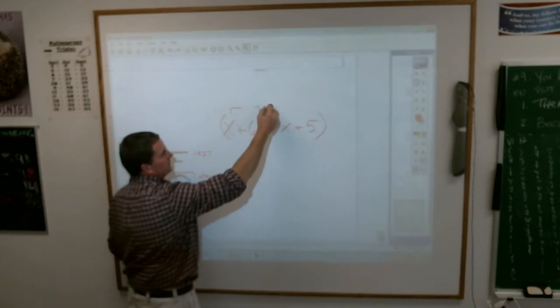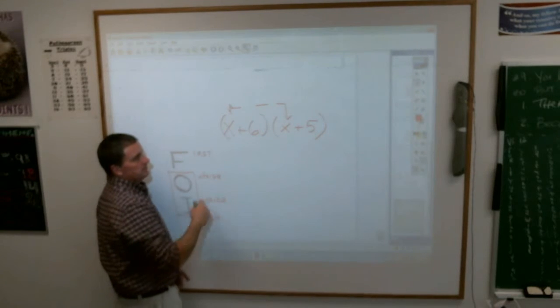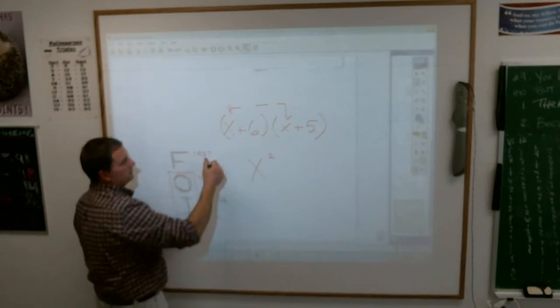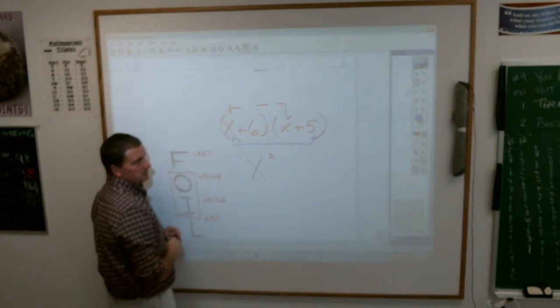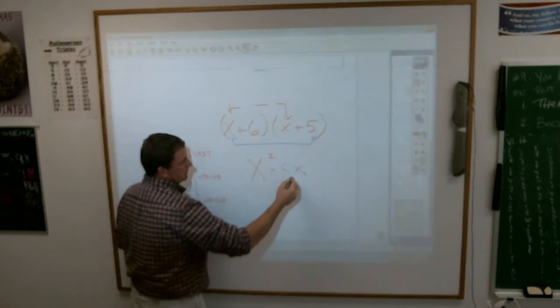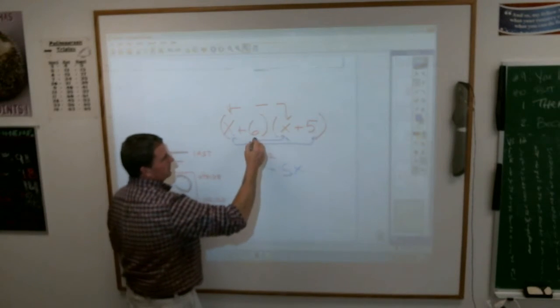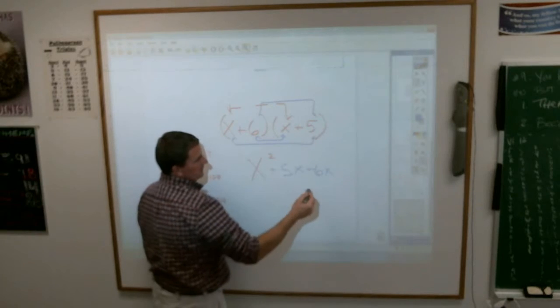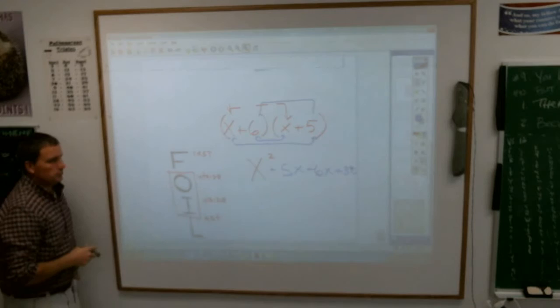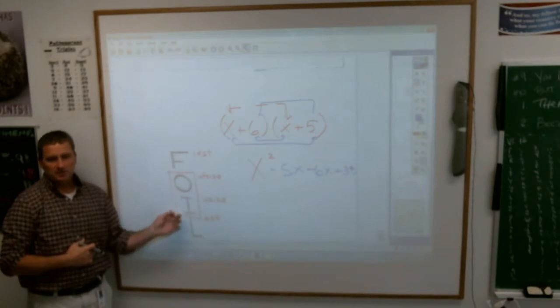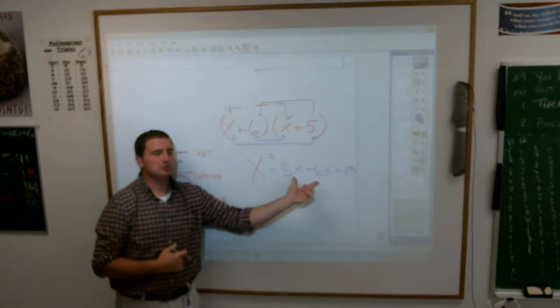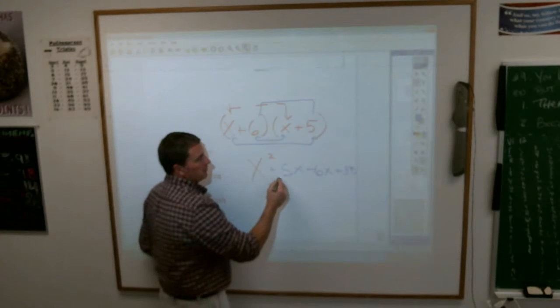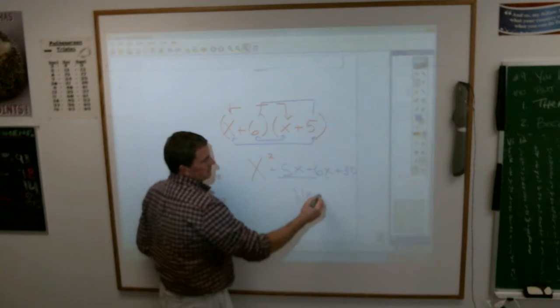If you follow this pattern, you can do this pretty easily. What are the two first terms? x times x is x squared. That's where my x squared comes from. What are my two outside terms? x times 5 is 5x. My two inside terms are 6 times x, which is 6x. And then my two last terms are 6 and 5, which is 30. The reason I had you put a little box around the O and the I is because in these binomials, your two middle terms will always combine. You can put those two together. What's 5x plus 6x? It's 11x plus 30.